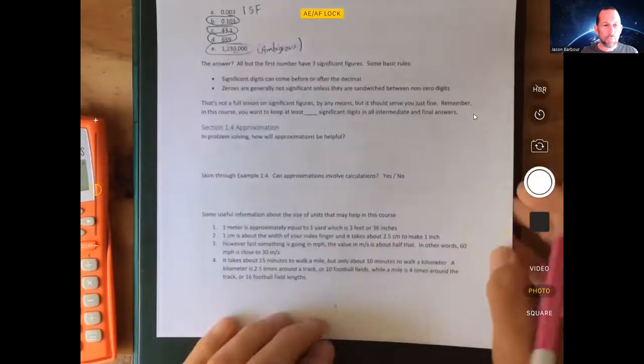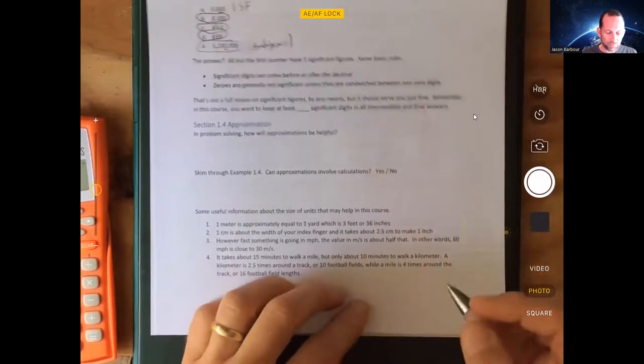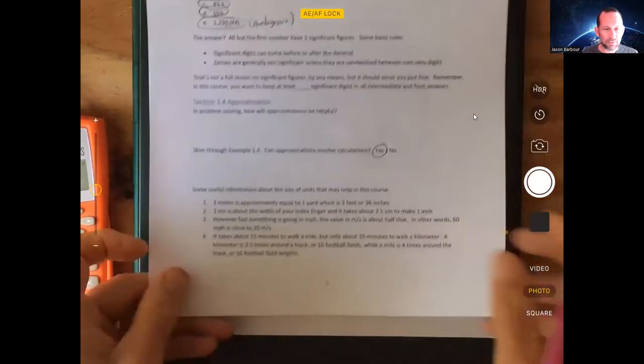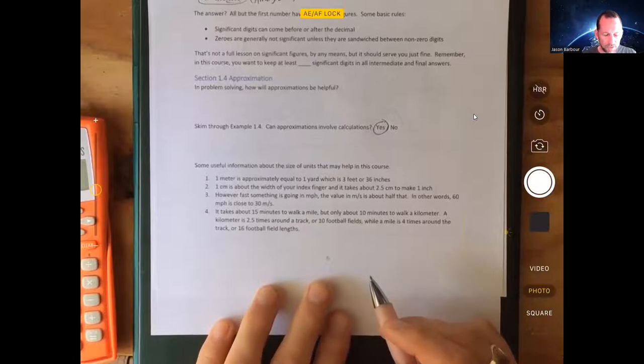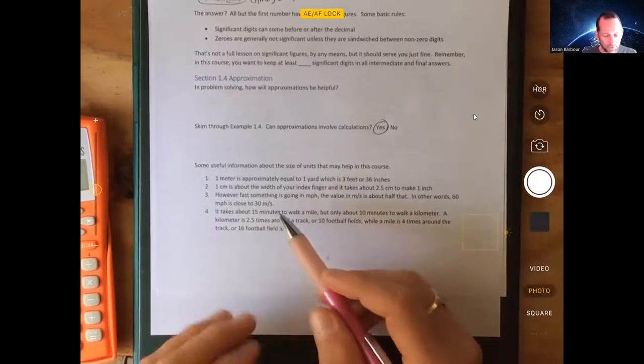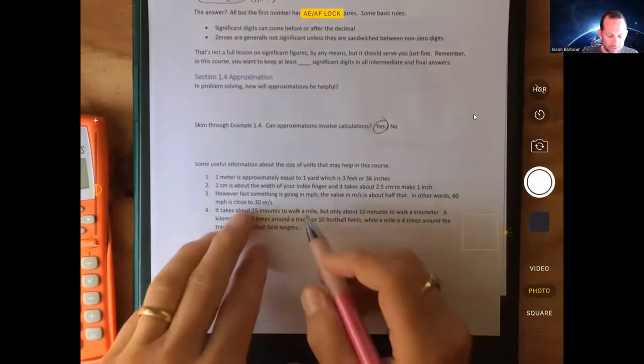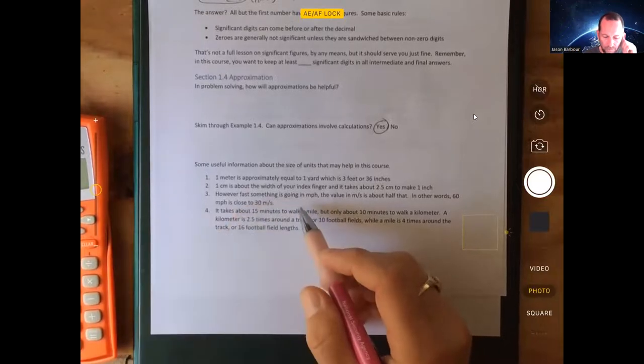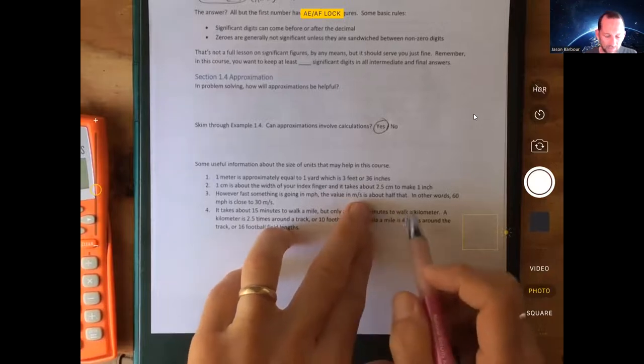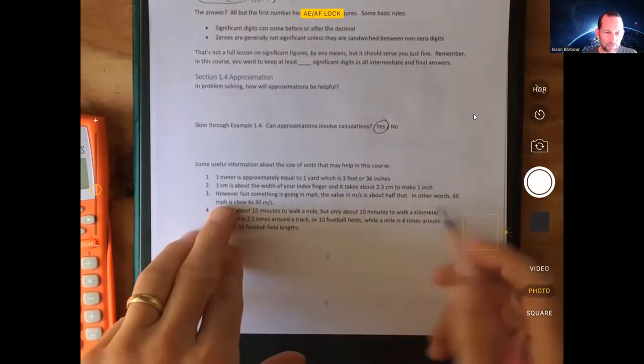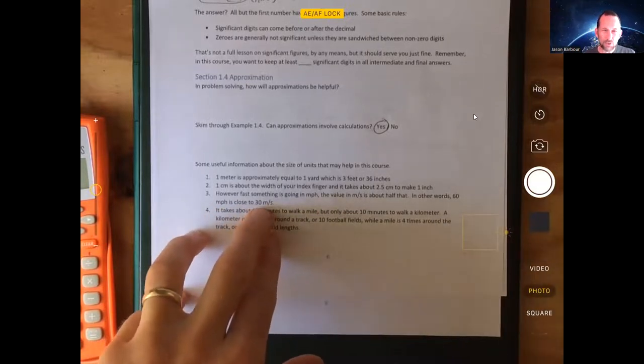The last part of this unit has to do with approximation. You can read and answer these. Here's just some useful things to keep in mind. Like a meter and a yard are about the same, which is about three feet. However fast something's going in miles per hour, the value in meters per second is about half of that. In other words, 60 miles per hour, which is kind of a common speed to drive on the highway, cut it in half to get it into meters per second. That's a useful thing to know. If we're working in meters per second in a problem, you're like how many miles per hour is that? You double it. You're like, oh okay, I can visualize that.